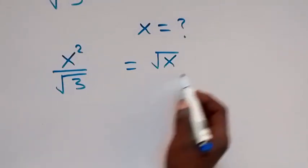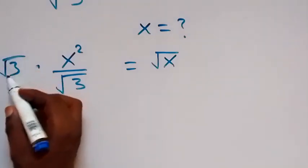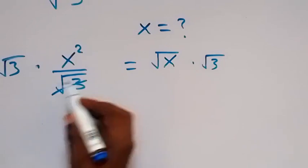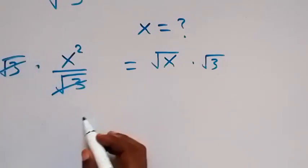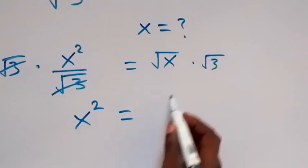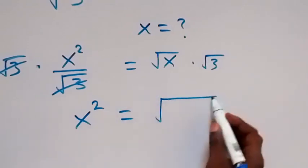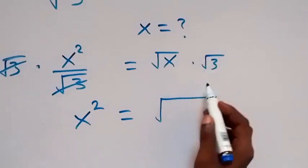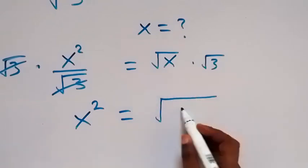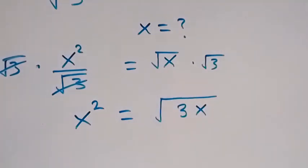We can get rid of the root 3 here and multiply both sides by root 3. When we multiply this side by root 3, the root 3 cancels with the 3, and we are left with x squared which equals the square root of 3 times x, that is √(3x).